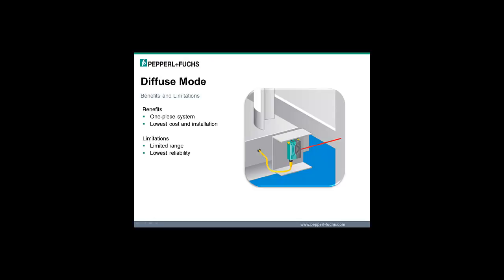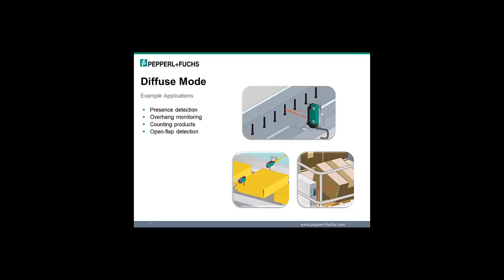Benefits of a diffuse sensor are that it is a one-piece system and does not require a reflector or a through-beam emitter-receiver pair, and it has the lowest cost and installation effort compared to other sensing modes. Limitations are that the sensing range is limited and highly dependent on the characteristics of the object to be detected, and diffuse sensors have the lowest reliability compared to other sensing modes. Example applications include cost-effective presence detection, material overhang detection, presence detection of passing totes or cartons, counting products for palletizing, and detecting open flaps on packaged cartons.